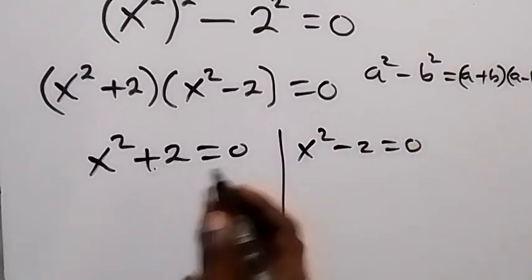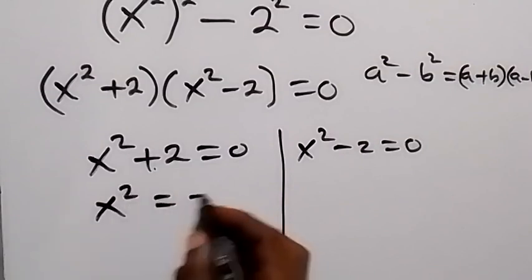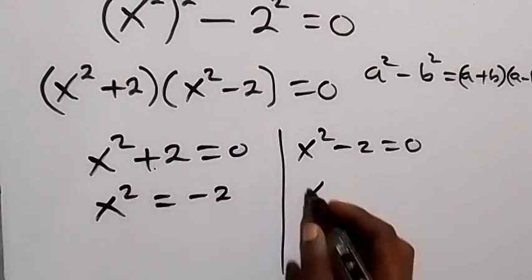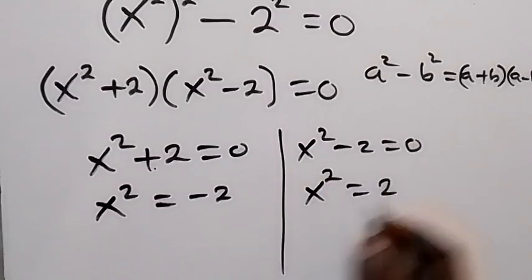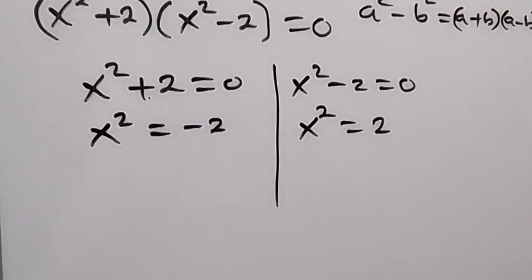Now from here we take 2 to become minus, that's x squared equals to minus 2. And here we take minus 2 to become plus, x squared equals to 2.